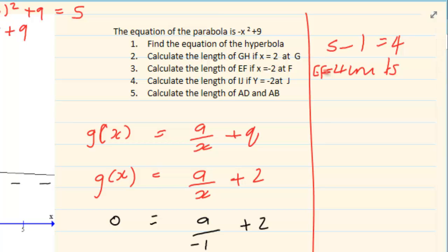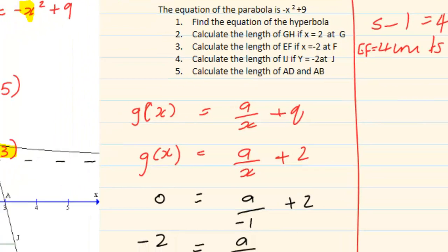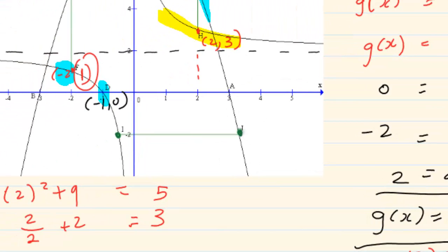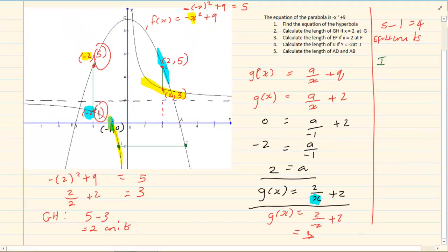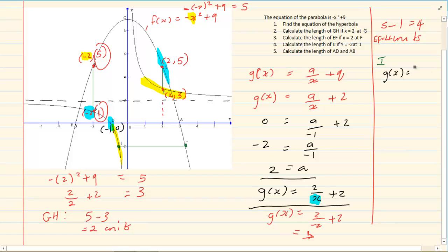Calculate the length of IJ. Now, look — this is a slightly different question. If y is equal to minus 2, we know that the y is minus 2. This is a bit more algebra. If I am working at this specific point, I can see it is the hyperbola graph. The hyperbola at I is g of x is equal to 2 over x plus 2.